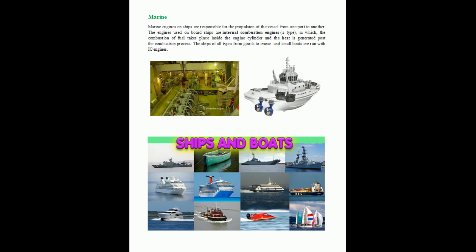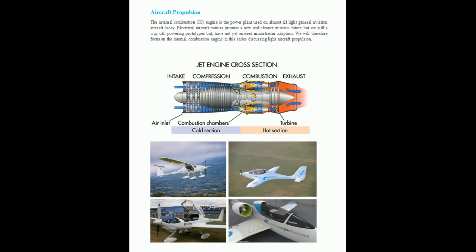Next is aircraft propulsion. Aircraft are run by internal combustion engines — here the jet engine type of internal combustion engine is used. This is the jet engine cross-section. Internal combustion engine means not only the reciprocating engine; the jet type engine is also an internal combustion engine. We can see the different parts: intake inlet, compression, combustion chamber where combustion takes place, and exhaust where turbine shaft power rotation is obtained.